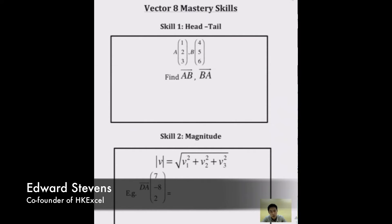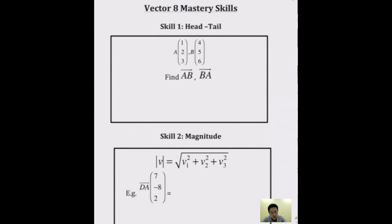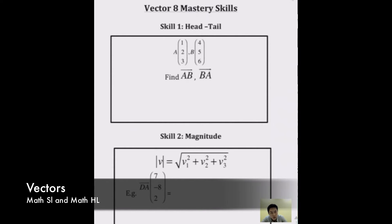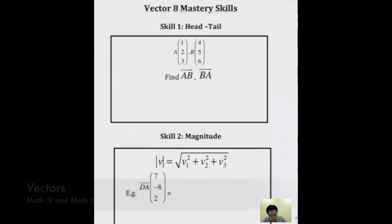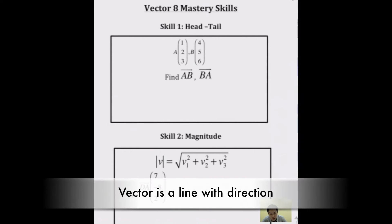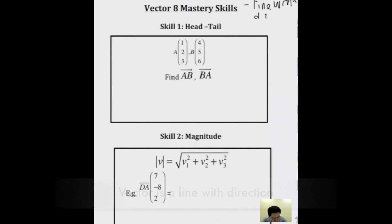Hello everyone. The topic I'm going to share with you now is vectors. In vectors, there are only eight skills that you need to know to ace your IB exam. So first, what does it mean by vectors? Vectors is a line with direction.